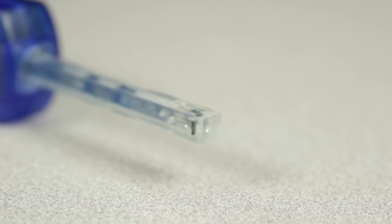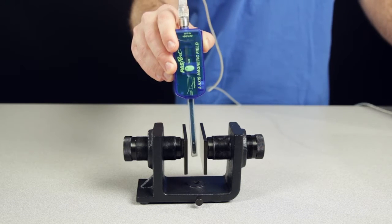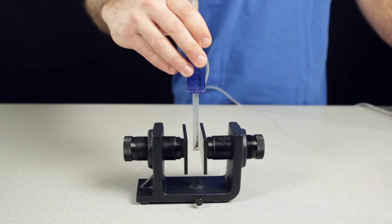Two white dots at the end of the probe mark the positions of the sensing elements. When measuring field strength, orientation of the sensor is important as the sensor is sensitive to magnetic field direction.